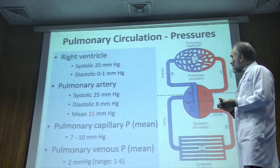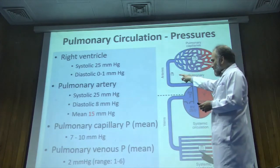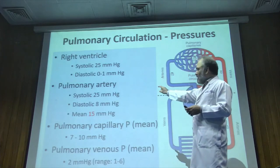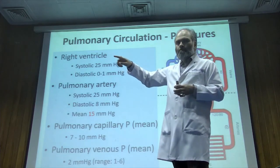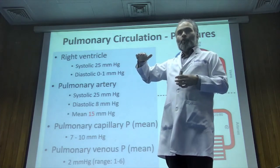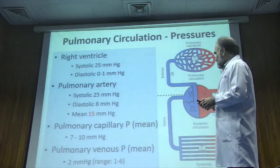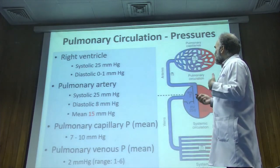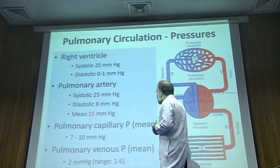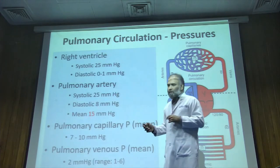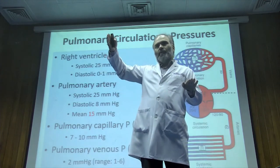Looking at pressures: pulmonary artery systolic pressure is 25 mmHg and diastolic is 8 mmHg, compared to systemic circulation where systolic is 120 and diastolic is 80. The mean pulmonary pressure gradient from artery to vein is 15 mmHg. This 15 mmHg gradient is what pushes blood through the entire lung from the arterial to the venous side.